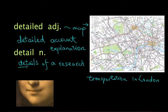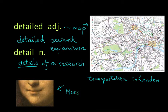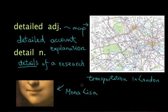A detail is of course a smaller part. So we often talk about the details of an artwork. For example, you must be able to recognize this — this is a detail from that famous lady called Mona Lisa. We do need details, but we don't need details for everything and not all the time.